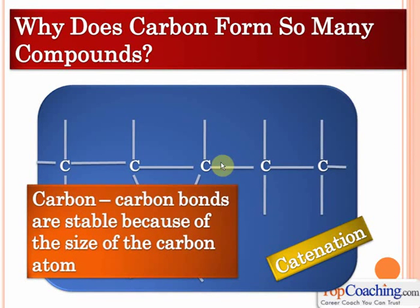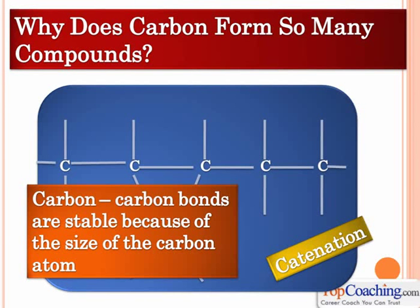Other atoms, like silicon, do not have the ability to form these chains because of the size of the atom. Scientists have found that if an atom is small in size, it can form a large chain of atoms. But if an atom is large in size, the chains formed become unstable. That is why silicon or sulfur do not form extensive atom-atom chains. So one important reason why carbon forms so many compounds is catenation — the ability of the carbon atom to form carbon-carbon chains.